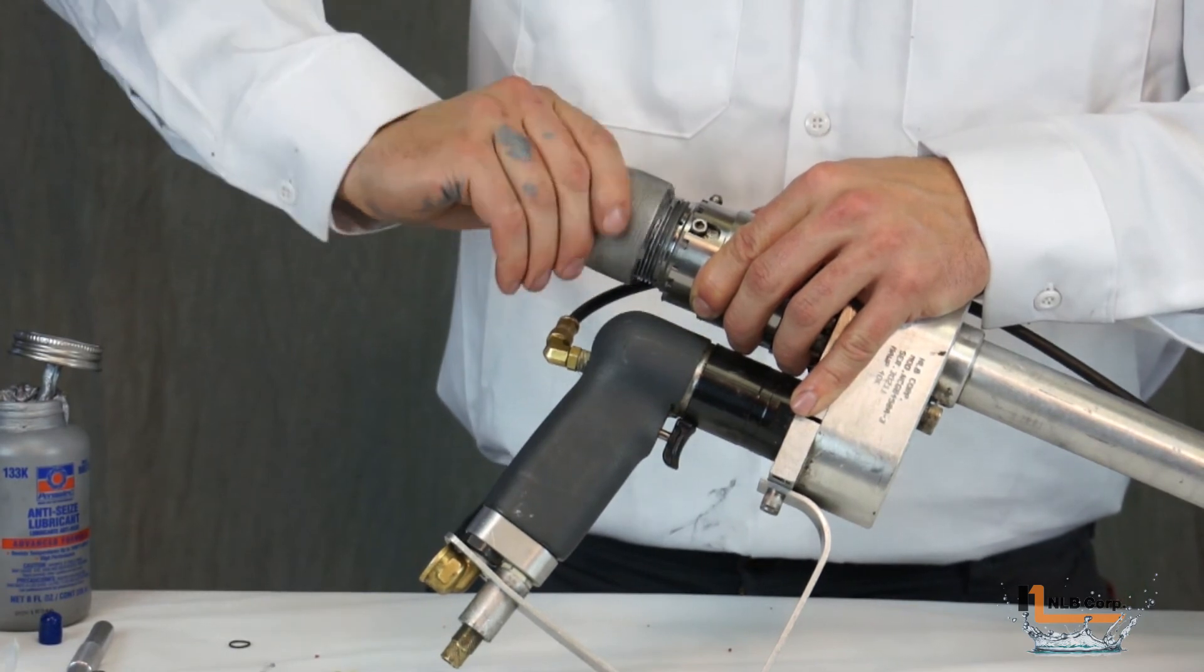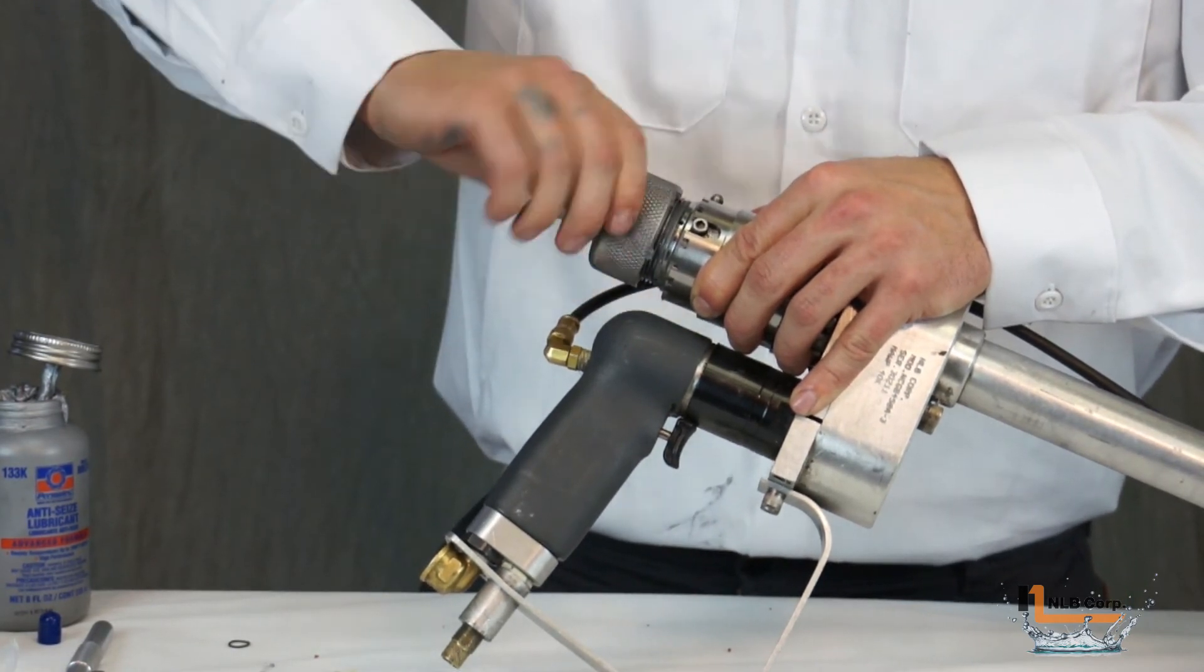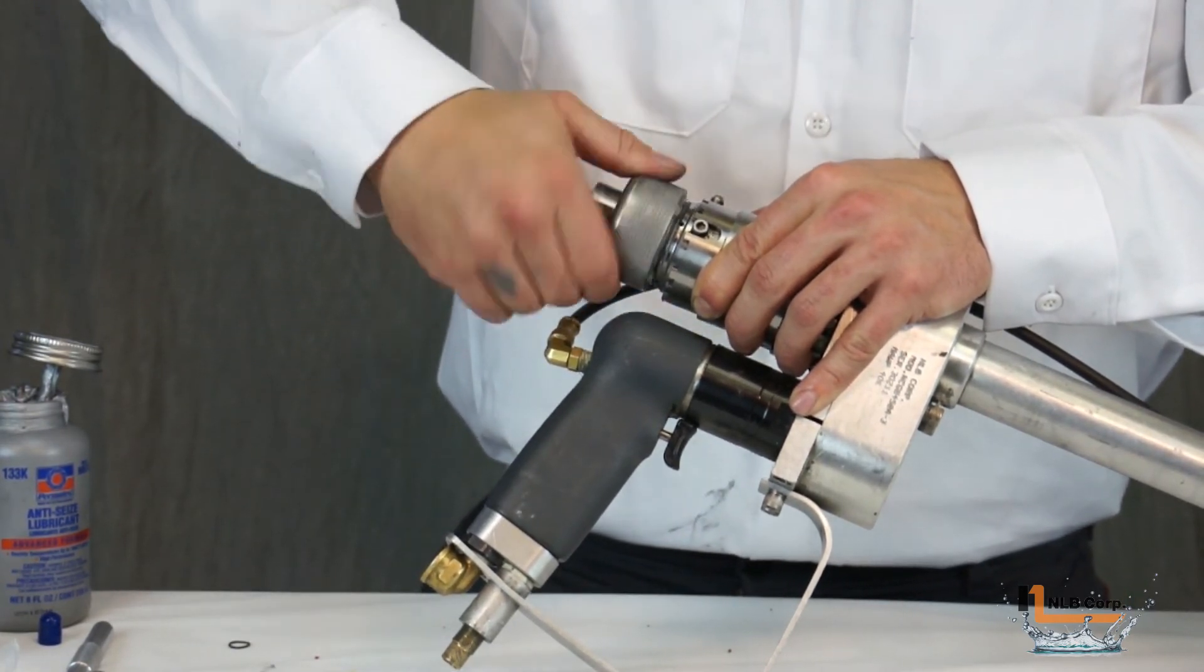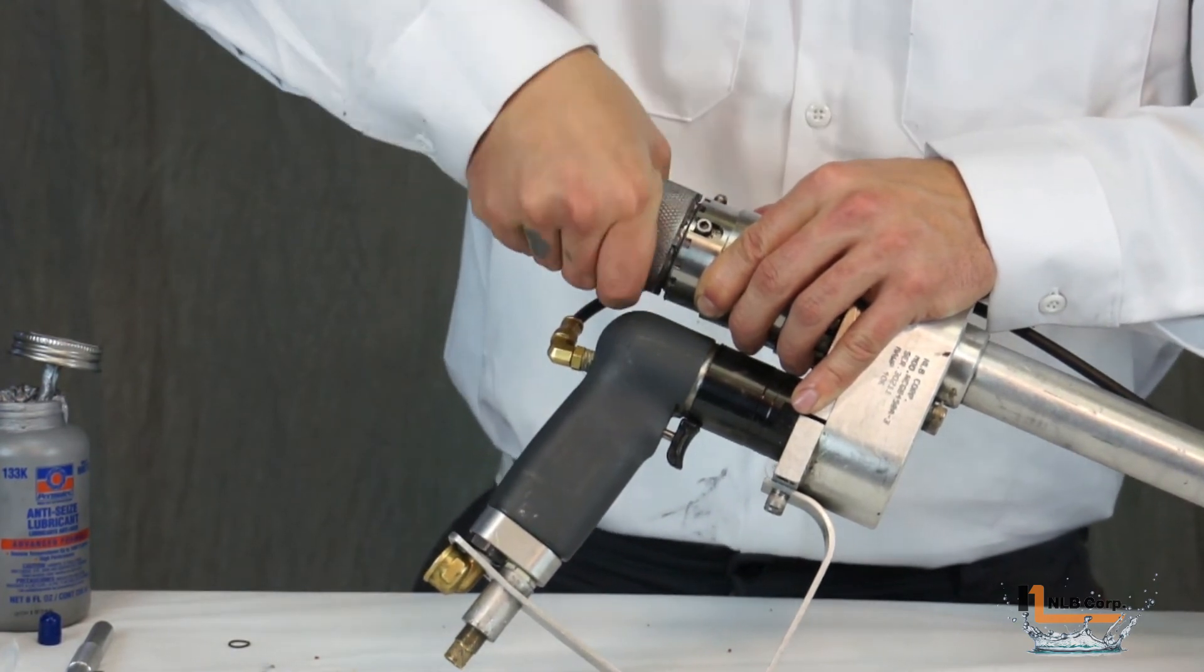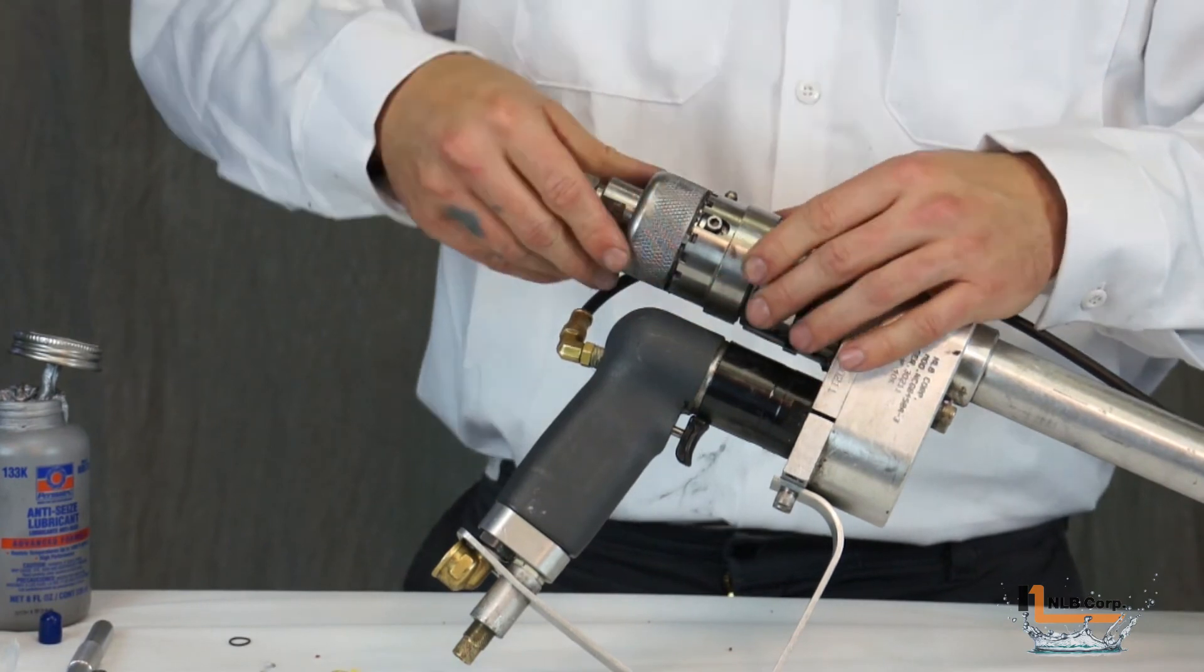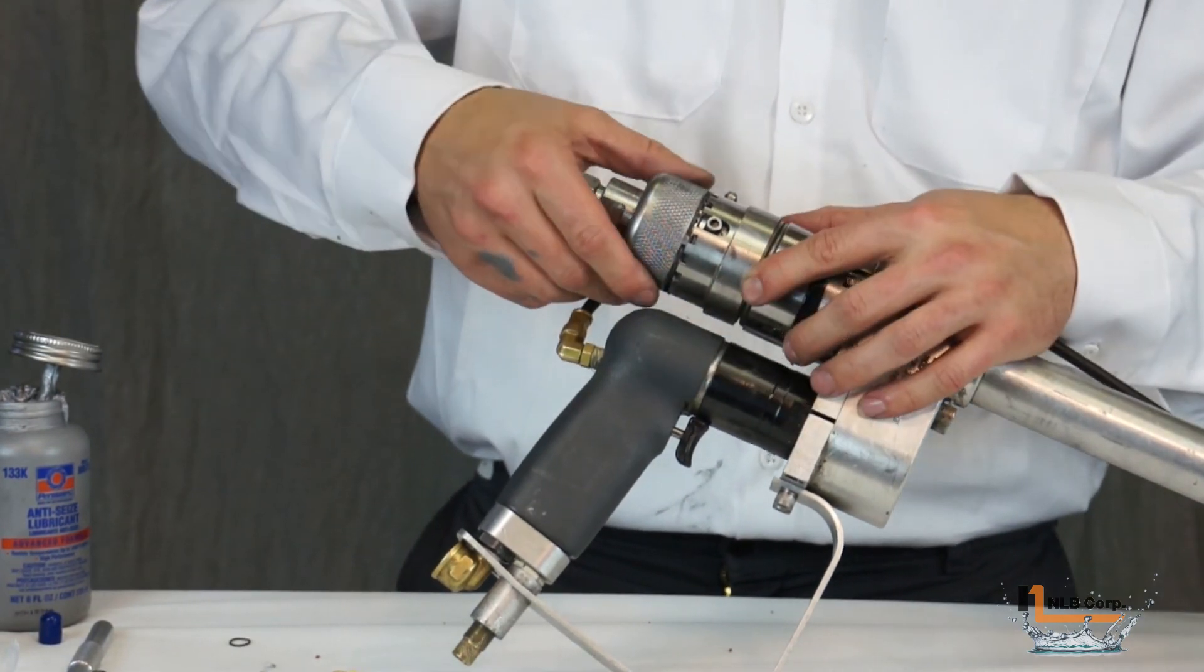Now, pull back the anti-rotation collar and reinstall the inlet end cap. Tighten the inlet end cap until it is snug. Then, release the anti-rotation collar and back off the end cap until the assembly clicks together.